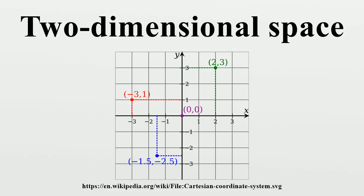Relative to these axes, the position of any point in two-dimensional space is given by an ordered pair of real numbers, each number giving the distance of that point from the origin measured along the given axis, which is equal to the distance of that point from the other axis.